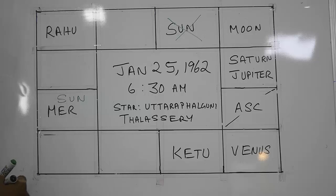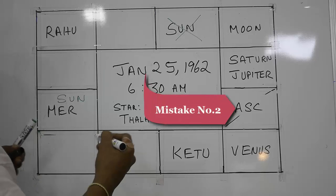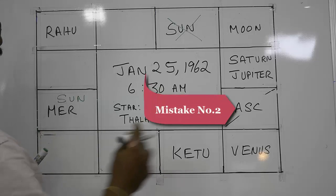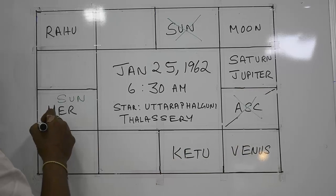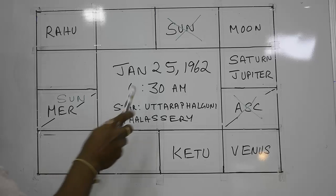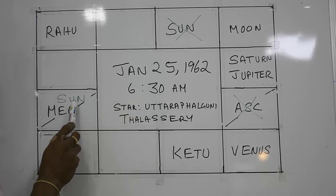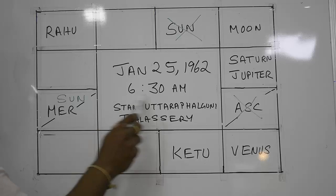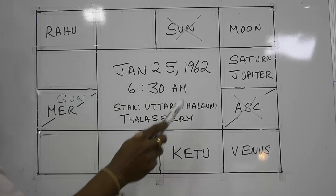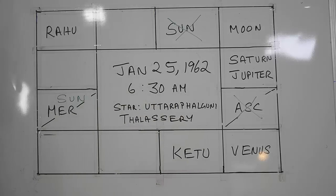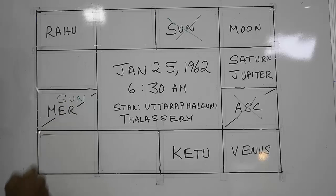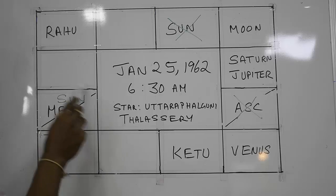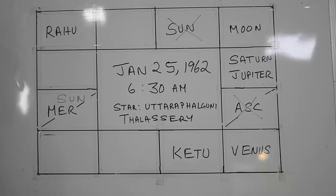The next mistake is that this placement is wrong — you can only have the ascendant over here. That is because the sun and the ascendant will be together at sunrise, since the ascendant is the rising sign at the time of your birth. So at sunrise the sun and the ascendant will be in the same spot. That is mistake number two.